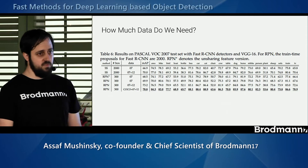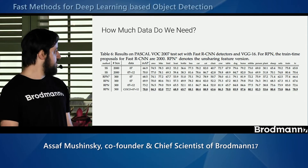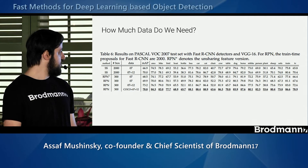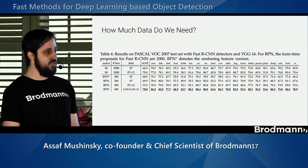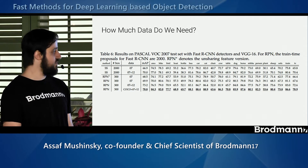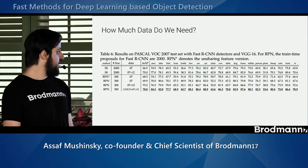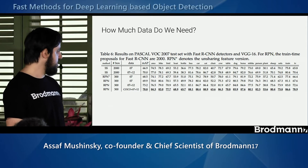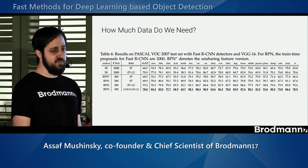Deep learning is known to be very data hungry. They showed that training on just Pascal 2007 gives a certain accuracy, but adding more data significantly improves it — average precision raised from 68 to 78.